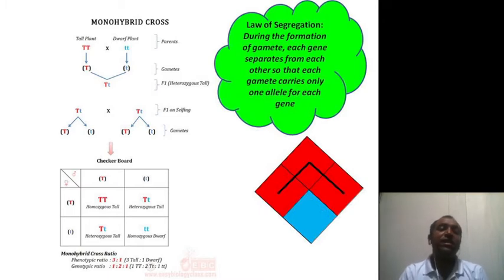Now the next step is your selfing. Selfing basically means F1 cross with F1. Now this F1 has capital T small t, so we are crossing two F1, capital T small t cross with capital T small t. There also what will happen, there will be meiosis and ultimately gametes will be formed.